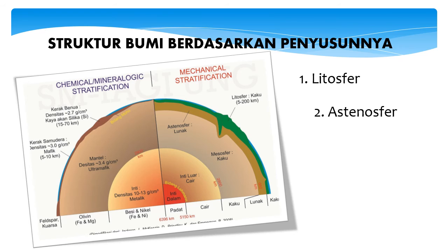Lapisan yang ketiga adalah mesosfer. Mesosfer terletak kira-kira 350-500 km di bawah astenosfer. Mesosfer lebih kaku dibandingkan astenosfer tetapi lebih kental dibandingkan litosfer. Lapisan itu terdiri dari sebagian besar selubung bawah dan inti bumi. Lapisan itu terbagi atas kira-kira 20 pecahan besar yang disebut lempeng, dengan ketebalan yang hampir sama dengan litosfer, yang merupakan kerak padat terluar bumi.